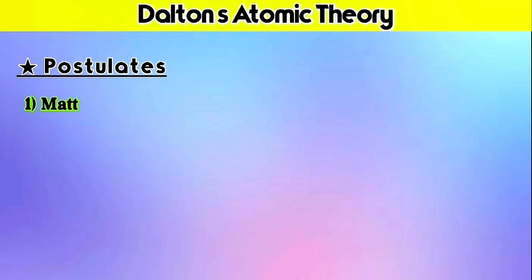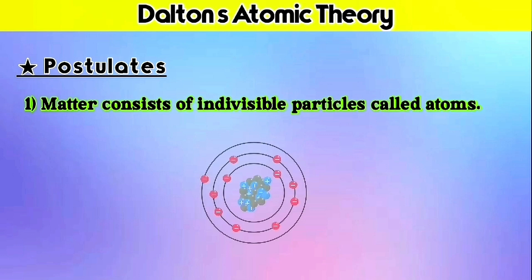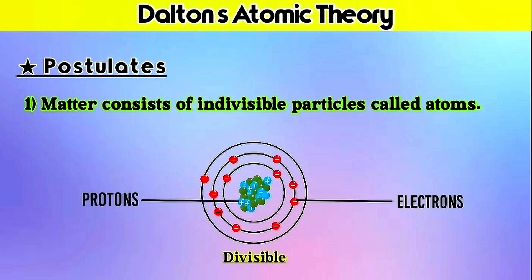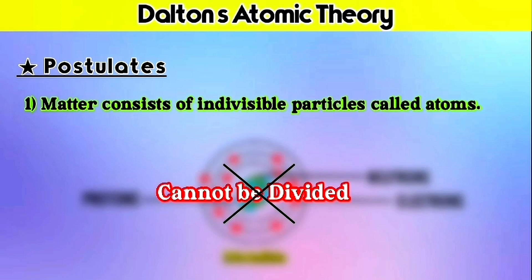The first postulate is: matter consists of indivisible particles called atoms. Now we already know that an atom is divisible — it can be divided into three subatomic particles, which are electrons, protons, and neutrons. But at that time, Dalton said that matter is made up of particles which cannot be divided. But later on, it was proved wrong. Therefore, it was a major drawback of Dalton's atomic theory.